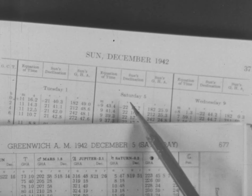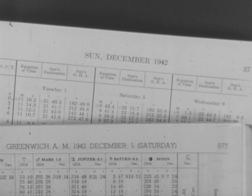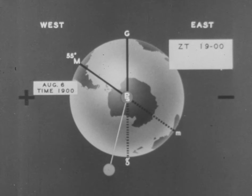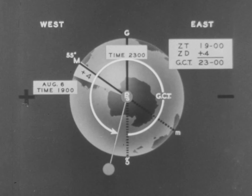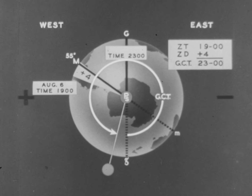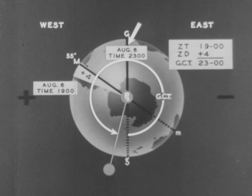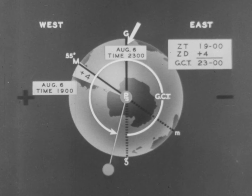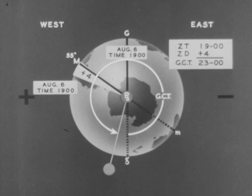Since data in the almanac are tabulated for Greenwich date as well as time, establishing the date at Greenwich is most important. Suppose that we assume our longitude to be 55 degrees west and the zone time 1900 on August 6th. As any place in longitude 55 degrees west is in zone plus four, we add the zone time and the zone description, and the sum is Greenwich civil time. Since the total is less than 24 hours, we know the Greenwich date is the same as the local date. It can be seen that the sun has not transited the lower branches of either the local or Greenwich meridians since Greenwich noon. Therefore, the dates are the same.